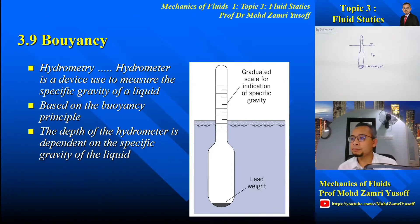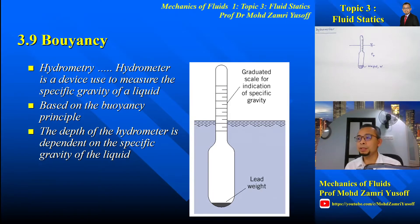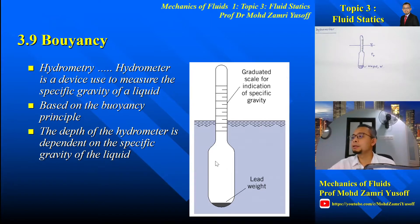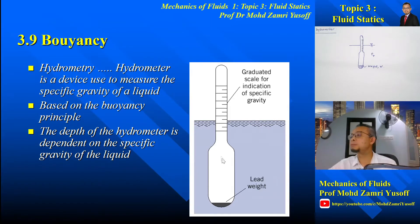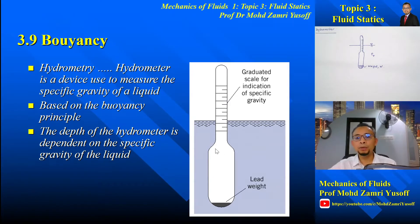By using the principles of buoyancy, a simple device called a hydrometer can be used to measure the specific gravity or density of a liquid. Basically, we have a container with a known mass and weight. When placed in a liquid, the displaced volume depends on the density of that liquid.